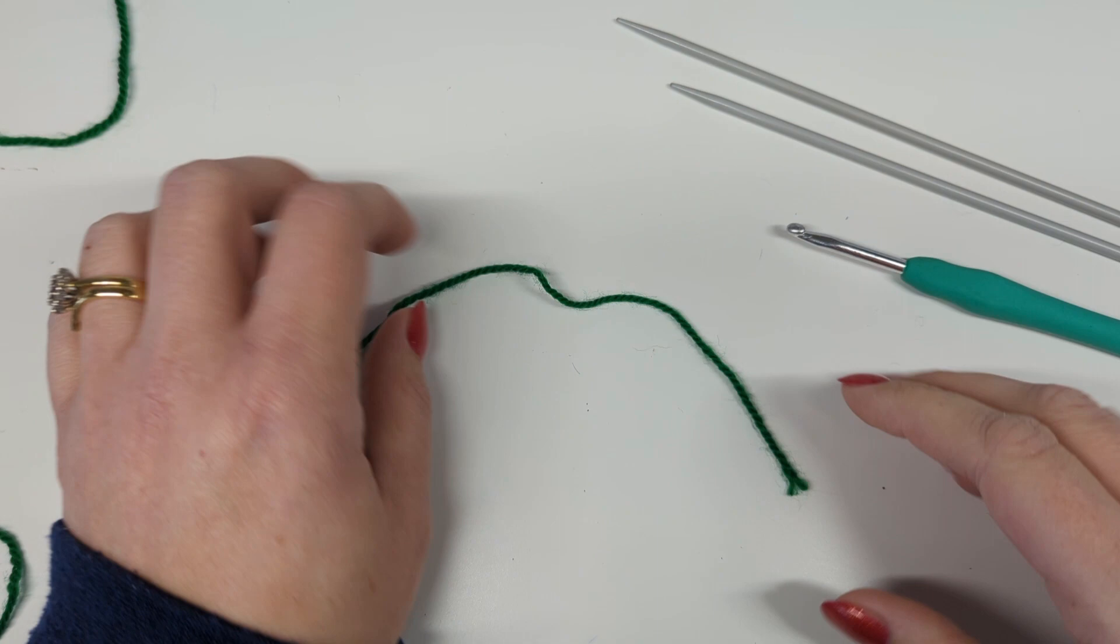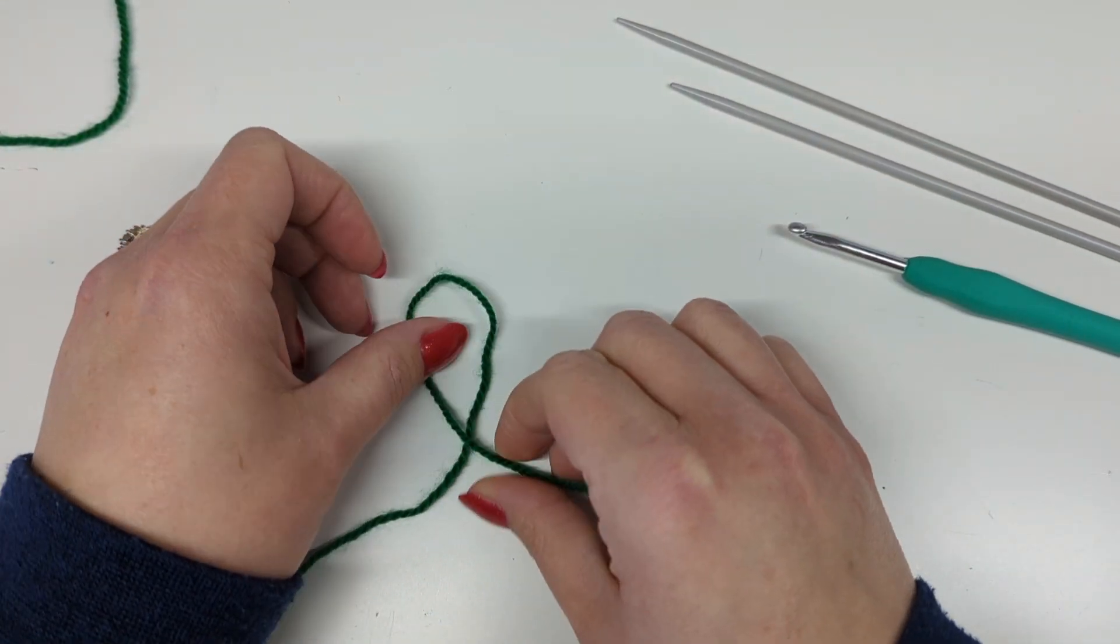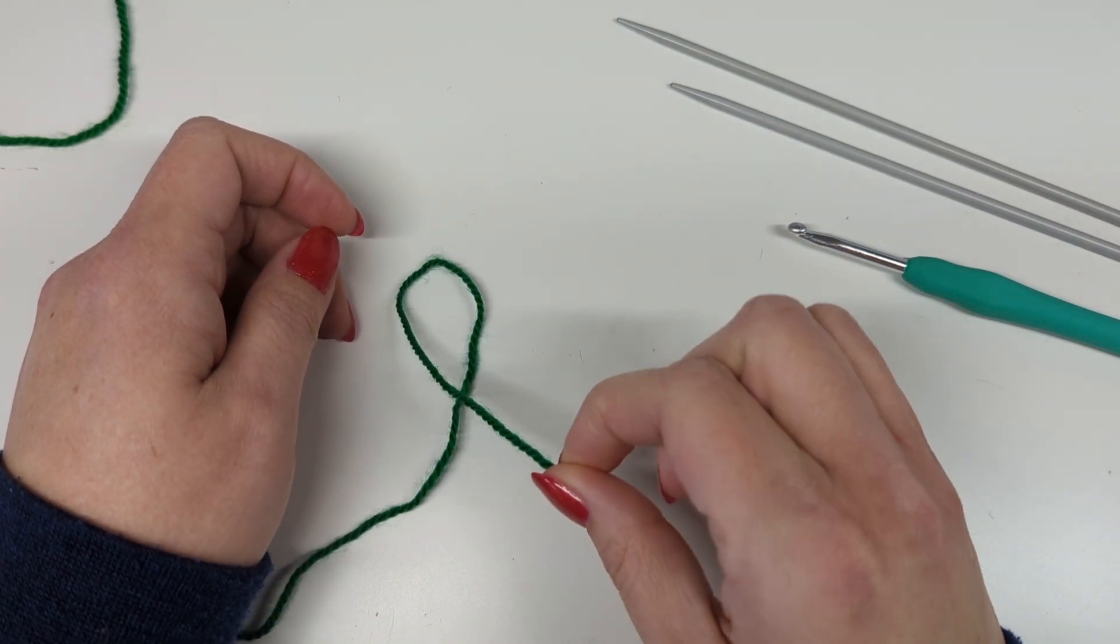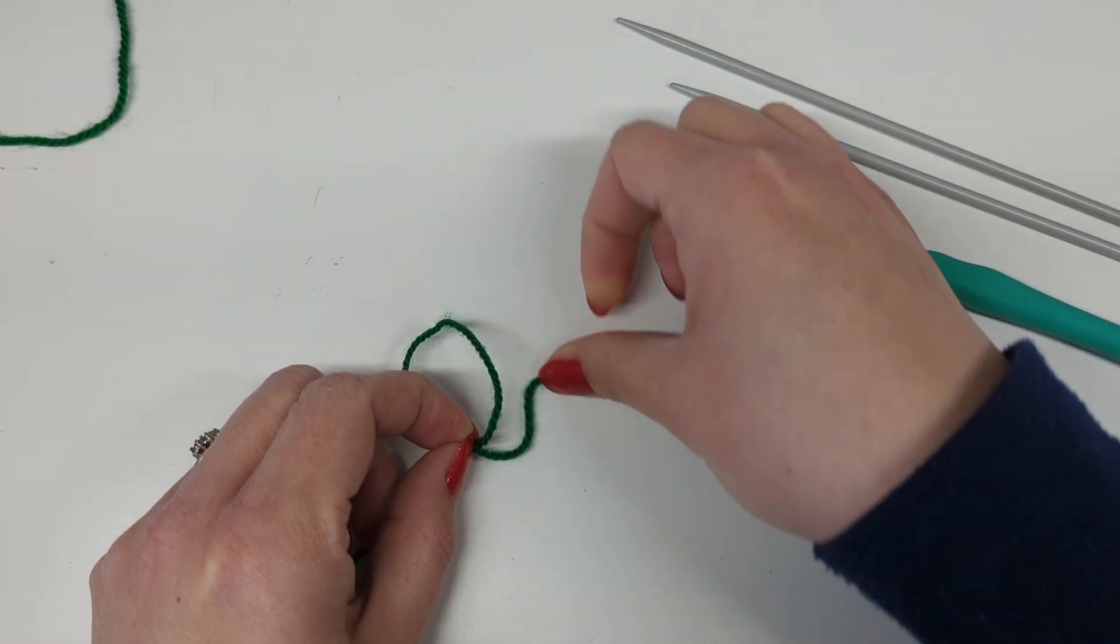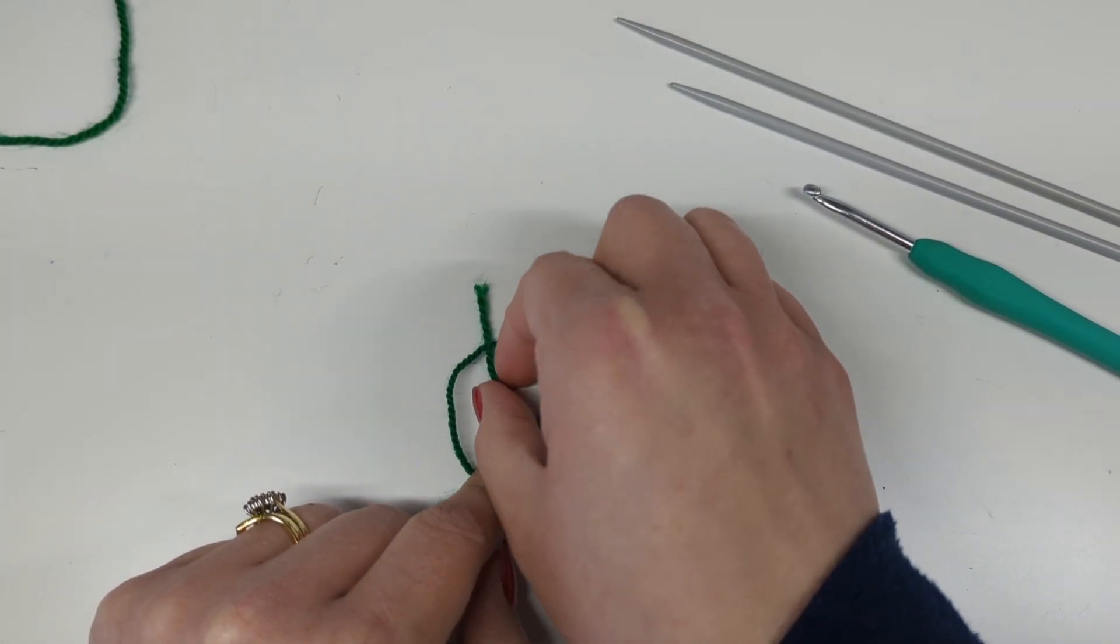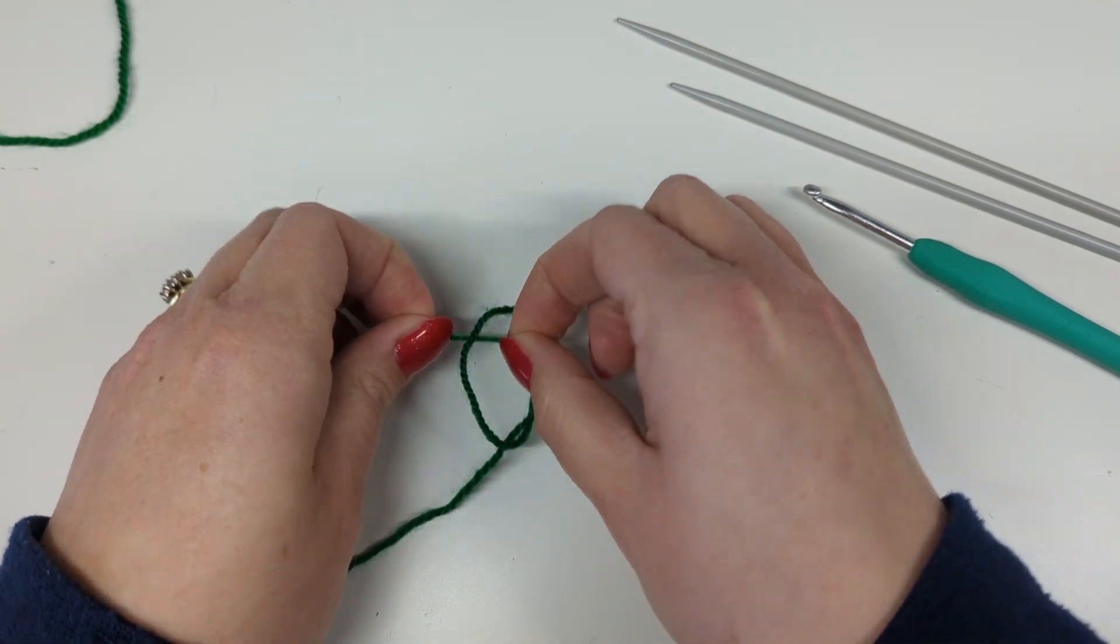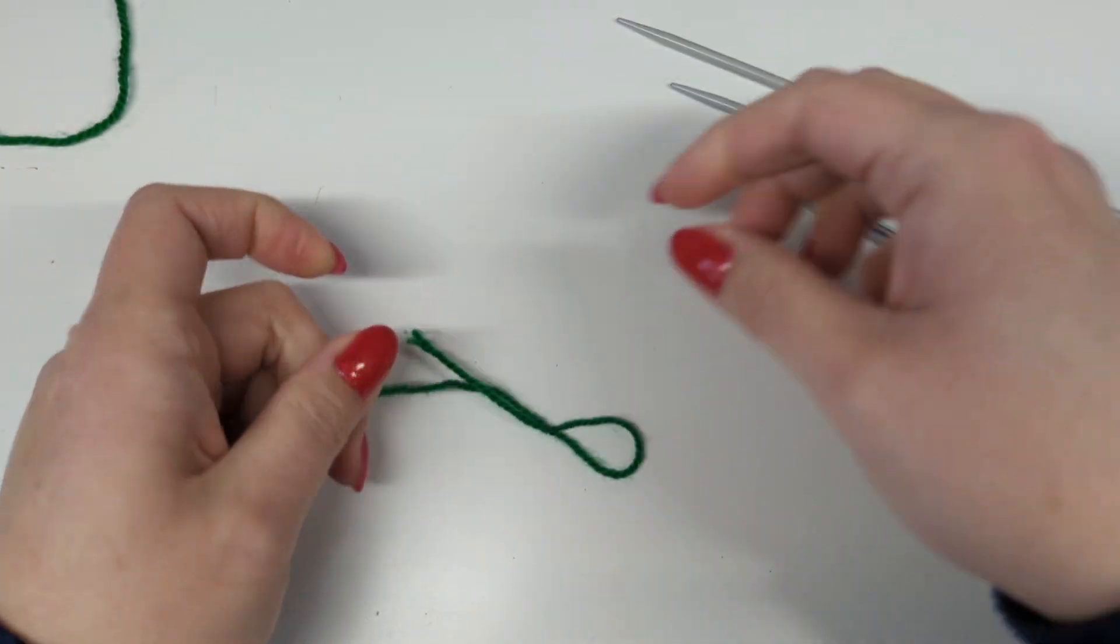So first thing you do is you get the tail end of your yarn like this and you flip it over so that it's on top of your main working yarn. So this is on top. Then you're going to swing this round and underneath like that and then you can grab that through the middle, take the two tails with your left hand and pull that loop to form a slipknot.